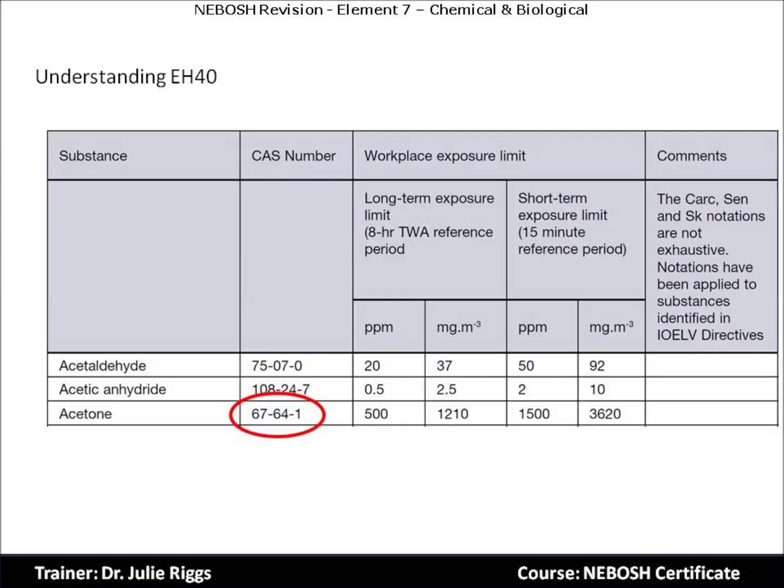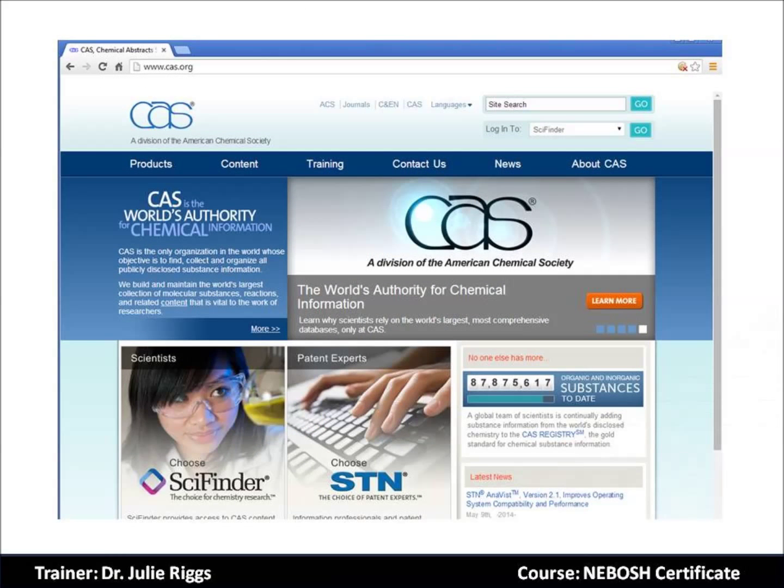Often chemicals can have many different product names or chemical names. Therefore, firstly, we need to identify the substance as the same as identified within the EH40 document, and this is achieved by using the CAS number — the Chemical Abstracts Service — which is a division of the American Chemical Society. It is the world's authority for chemical information. CAS is the only organisation in the world whose objective is to find, collect and organise or publicly disclose substance information. The CAS registration number itself has no inherent chemical significance. It does provide an unambiguous way to identify a chemical substance or molecular structure where there are many possible systematic, generic, proprietary, or trivial names.